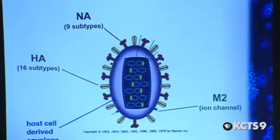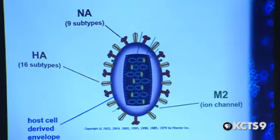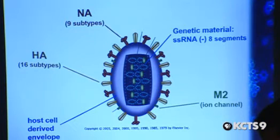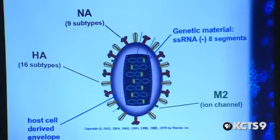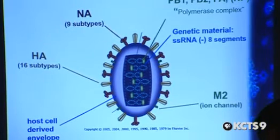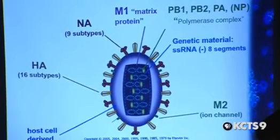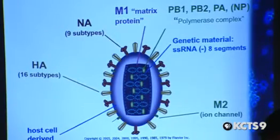The envelope of the virus itself is derived from the cell that it infected, so as the virus buds out of the cell it carries with it a piece of that cell membrane. Inside that viral particle are eight genes that occur as RNA rather than DNA, as well as some other proteins associated with those genes that allow for their replication, all bound up with another matrix protein.